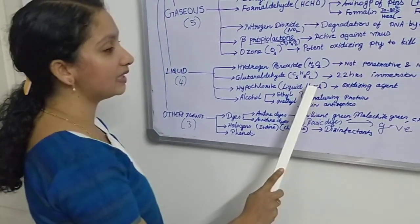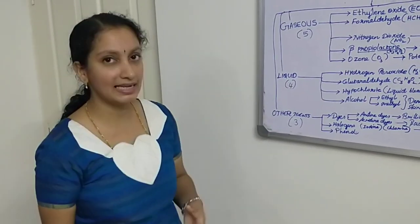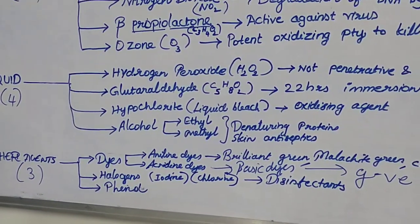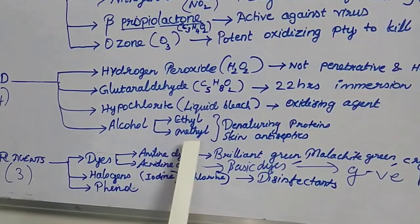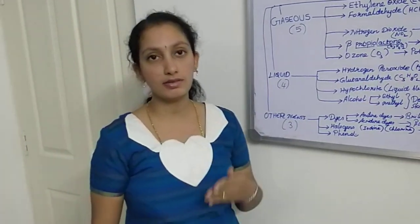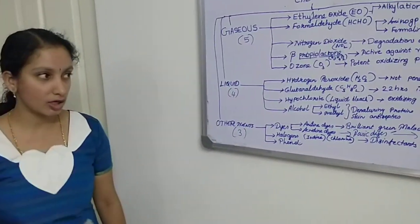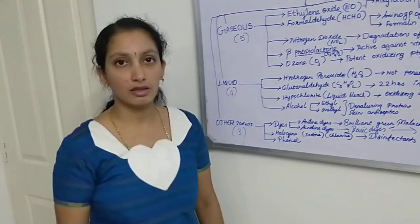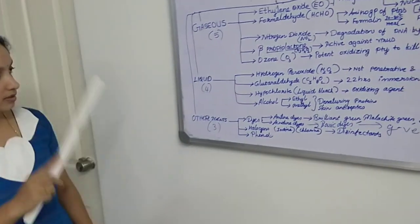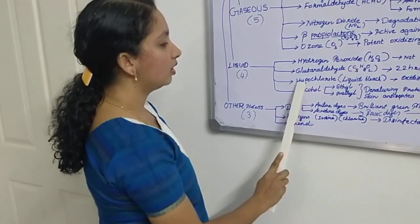The third liquid agent is hypochlorite, a type of liquid bleach and oxidizing agent that kills infectious particles by adding oxygen to them. The fourth is alcohol — the two main types used for sterilization are ethyl alcohol and methyl alcohol. Alcohol is a key ingredient in sanitizers; it works by denaturing proteins of the microorganisms and is mainly used as a skin antiseptic.